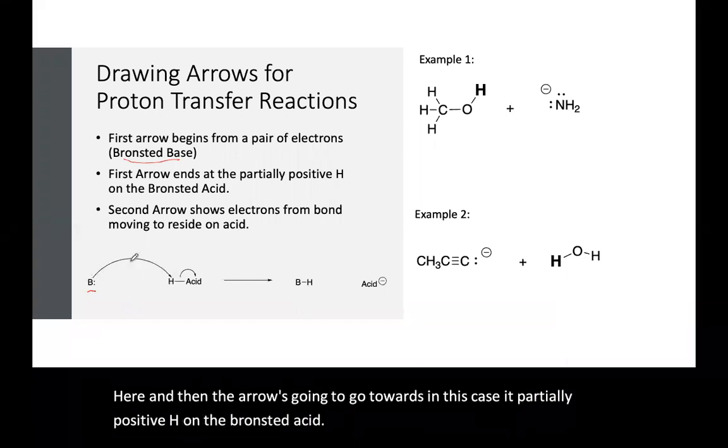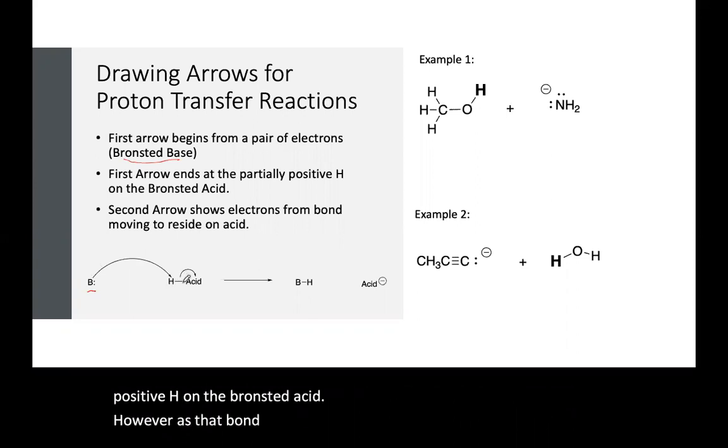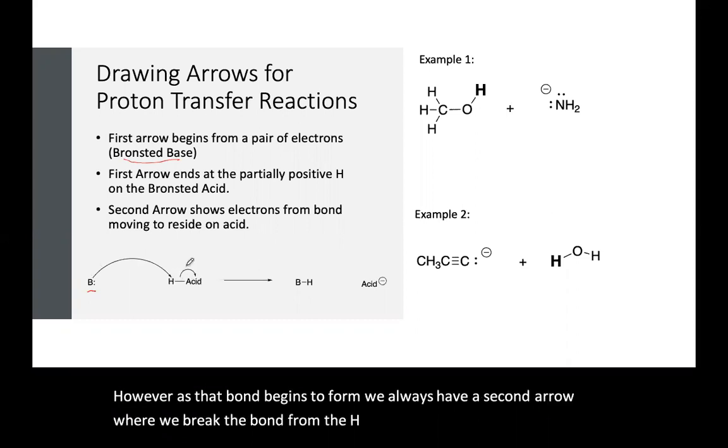However, as that bond begins to form, we always have a second arrow where we break the bond from the H to the Bronsted acid. So there will be two arrows for each of these reactions.